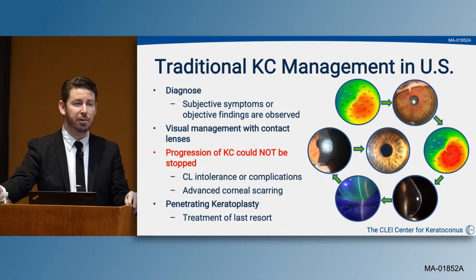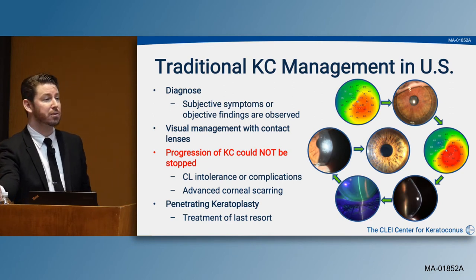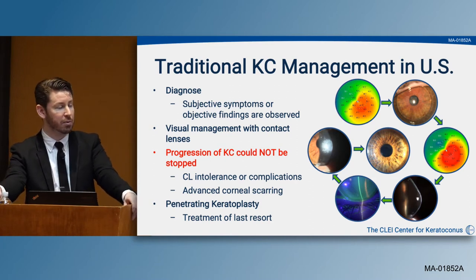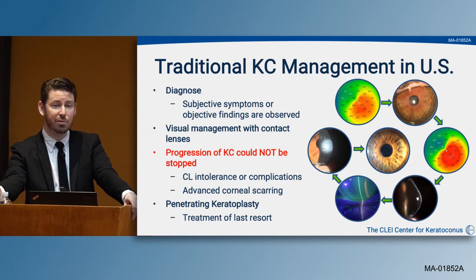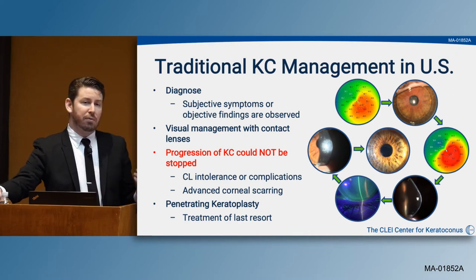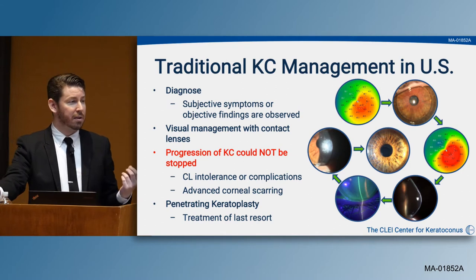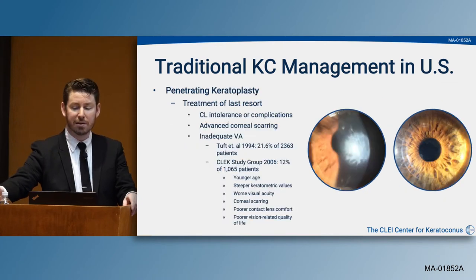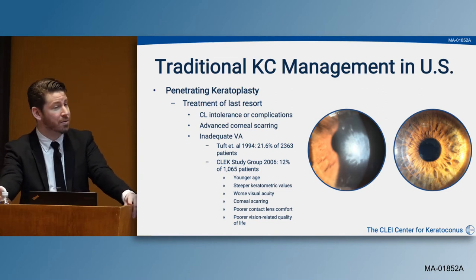The traditional management of keratoconus in the United States has always been to diagnose the disease when subjective or objective findings are presented, then visually manage individuals with corneal gas permeable lenses to improve visual quality. Knowing we couldn't stop progression, we continuously changed the gas permeable lens to accommodate the more advanced keratoconic shape. If complications arose with advanced scarring or contact lens intolerance, we would go to penetrating keratoplasty as the treatment of last resort.